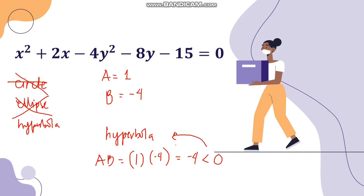That's it for today. I hope you learned something about the general equation of conic sections and how to identify them by looking at the values of A and B, as well as some of the properties. See you next time.